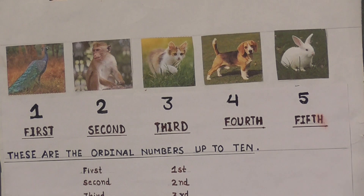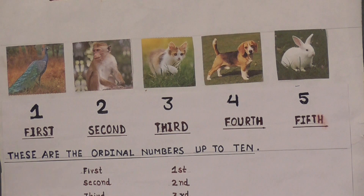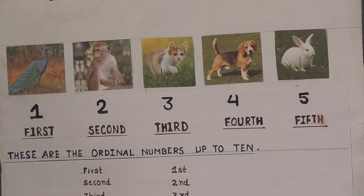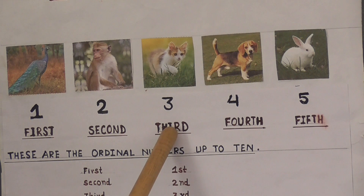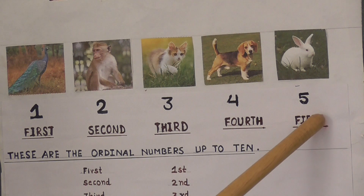Now let us find out the position of the animals. What is the position of Peacock? Peacock is at the first position. What is the position of Monkey? Monkey is at the second position. What is the position of Dog? Dog is at the third position. What is the position of the next animal? It is at the fourth position. What is the position of Rabbit? Rabbit is at the fifth position.